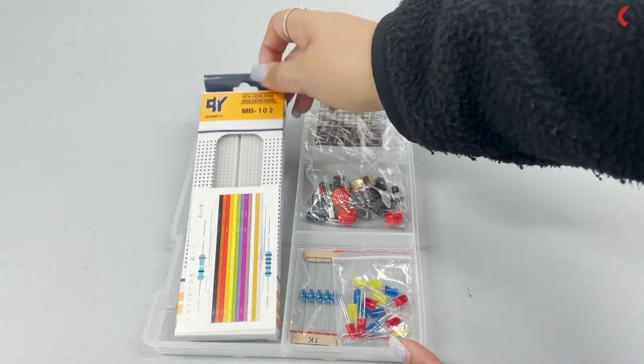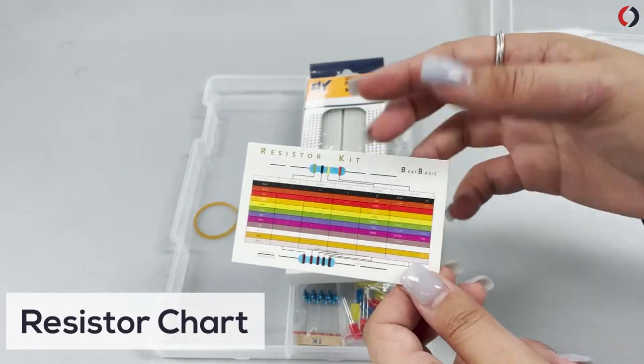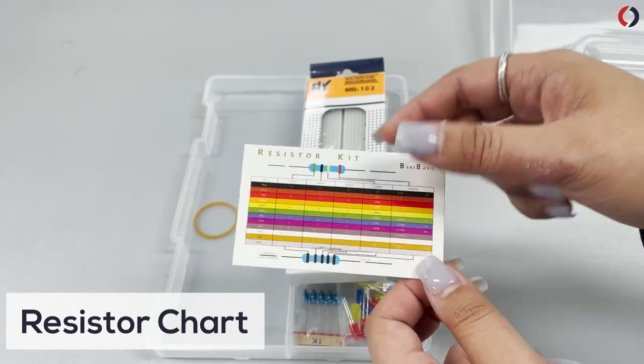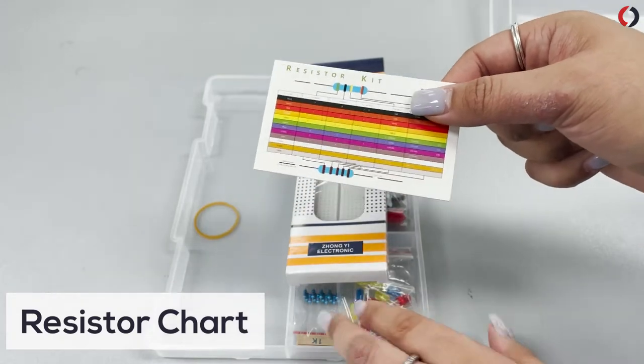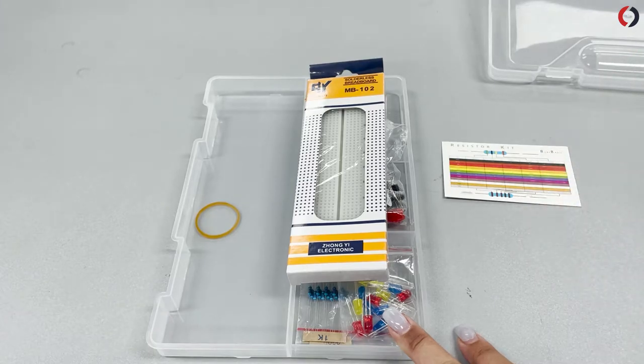So we can start with, oh, this is probably my favorite part. This is a resistor chart. So you can see which resistance or resistor matches with what color, which is really useful when you just have a bunch of them lying around. So that's great.